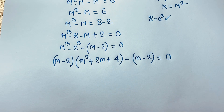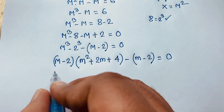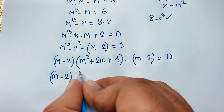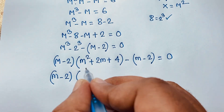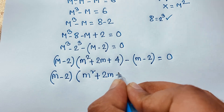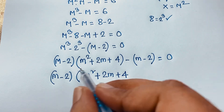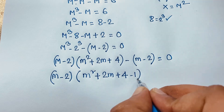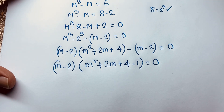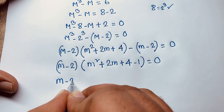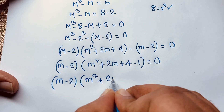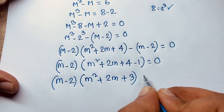Then we also have minus (m minus 2) equal to 0. Notice that (m minus 2) is common to both terms. Taking (m minus 2) as the common factor and dividing, we get (m minus 2)(m² plus 2m plus 4 minus 1) equal to 0.